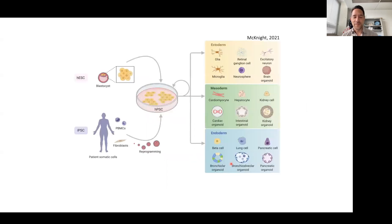I'm sure everyone here is familiar with this schematic that depicts the use of human embryonic stem cells or human induced pluripotent stem cells in deriving the three major germ layers of the body: the ectoderm, mesoderm, and endoderm.